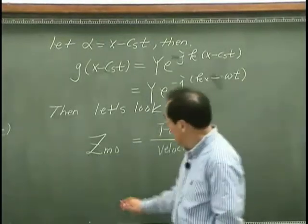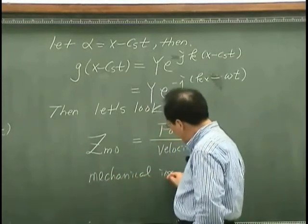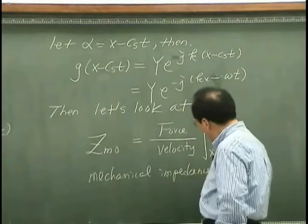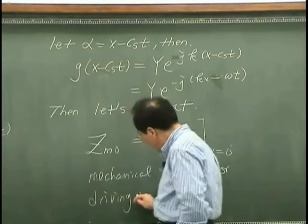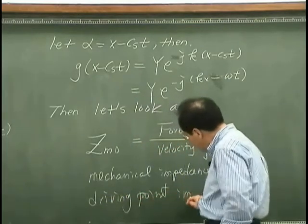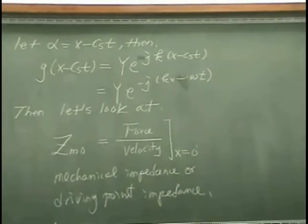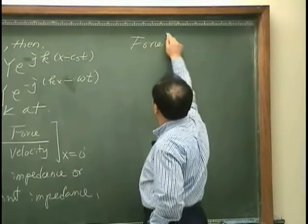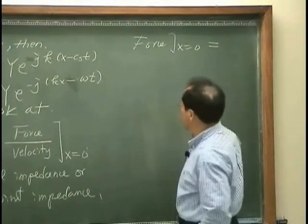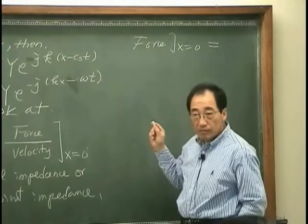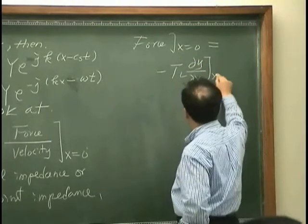What we call mechanical impedance or driving point impedance. The force at x equals zero — in other words, the force in the y direction at x equals zero — would be minus TL times dy/dx evaluated at x equals zero.